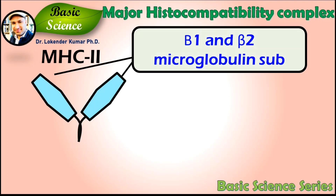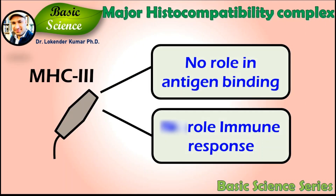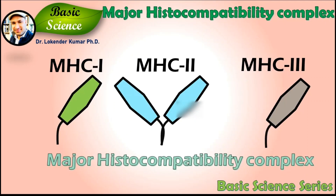MHC class 3 molecules are poorly defined structurally as well as functionally. They are not involved in antigen binding; only a few are actually involved in immunity, while others are signaling molecules used in cell communication. They are mainly known for their genes, as their gene cluster is present between those of MHC class 1 and class 2.